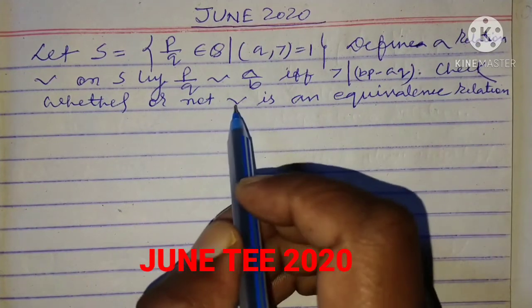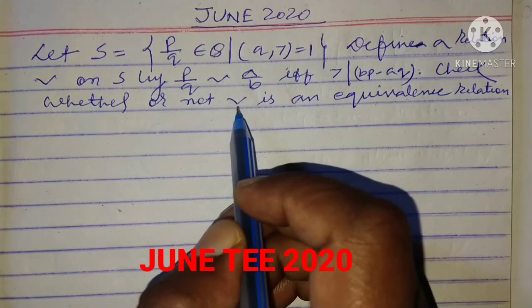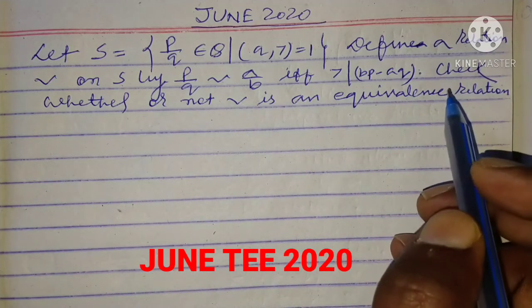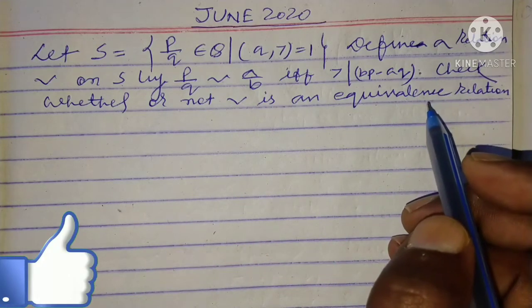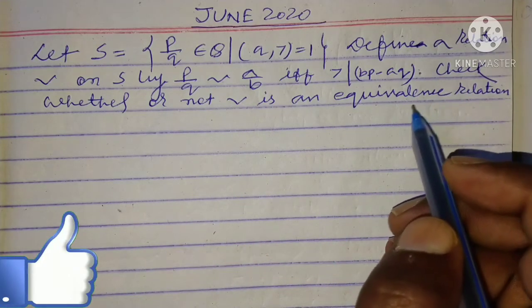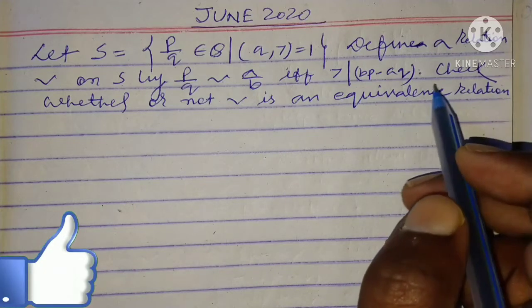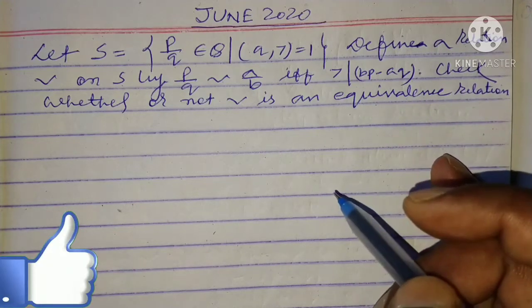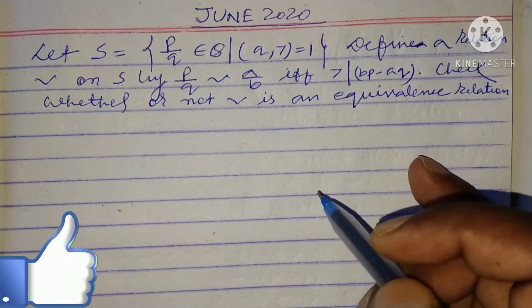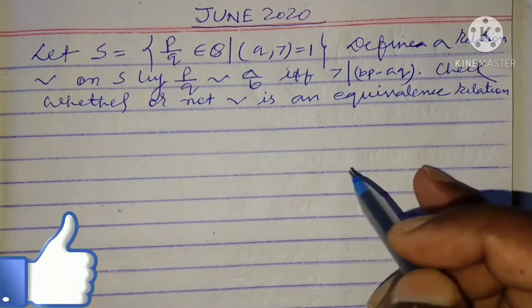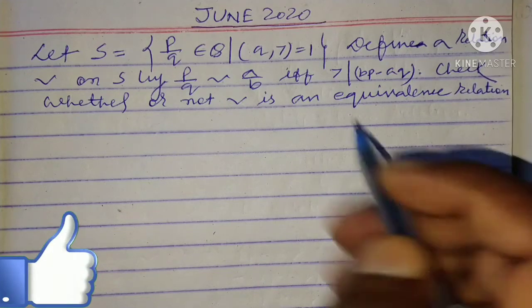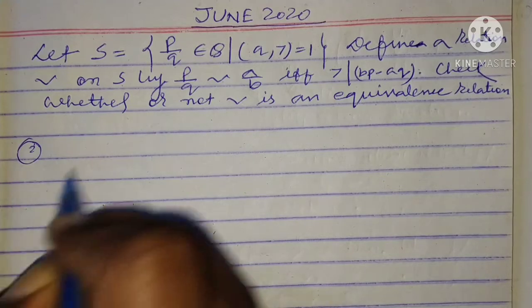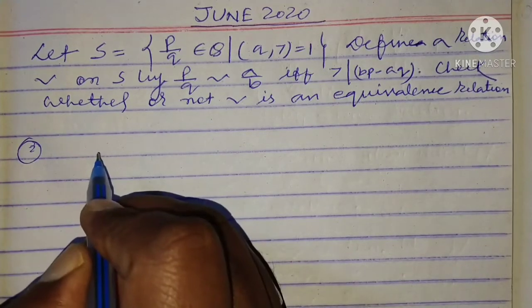We have to check this relation. It would be an equivalence relation if we verify reflexivity, symmetry, and transitivity.